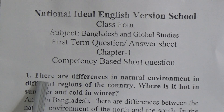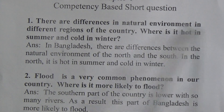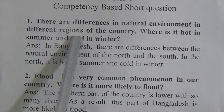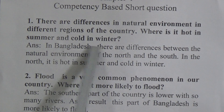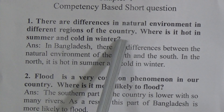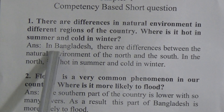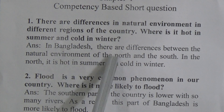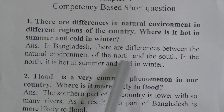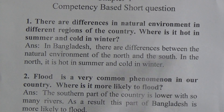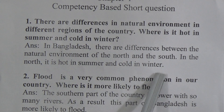First question: there are differences in natural environment in different regions of the country. Where is it hot in summer and cold in winter? The answer is: in Bangladesh, there are differences between the natural environment of the north and the south. In the north, it is hot in summer and cold in winter.